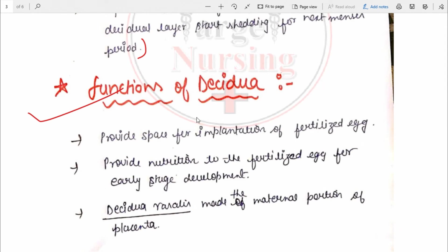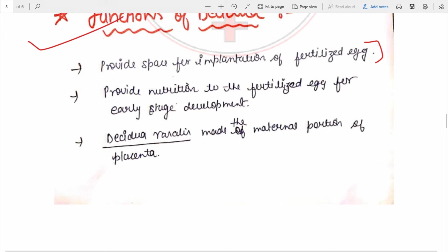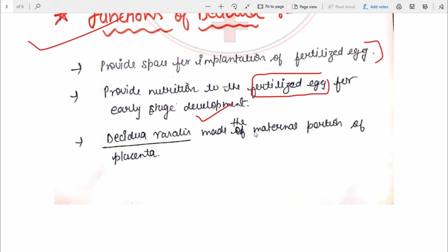Now we come to the functions of decidua. First, it provides space for the implantation of the fertilized egg. Second, it provides nutrition for early stage development. Third, the decidua basalis will form the maternal portion of the placenta. Decidua basalis is one layer of decidua which we will see later in this video. These are the functions of decidua.